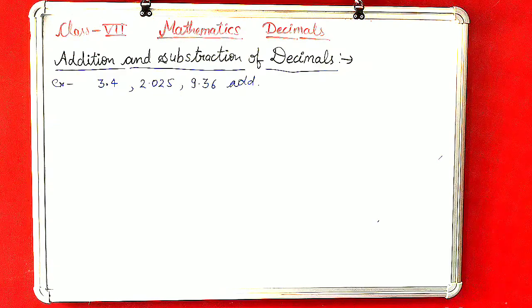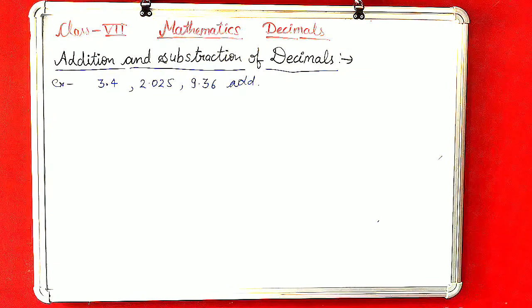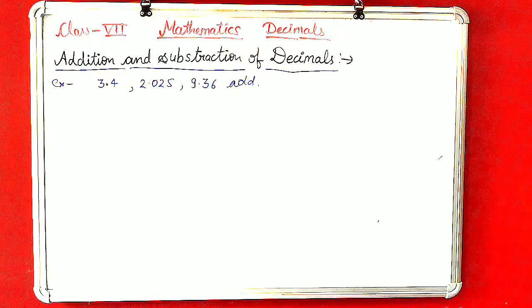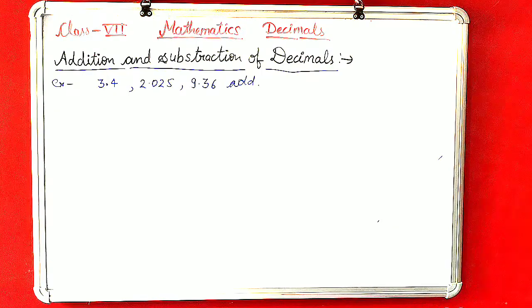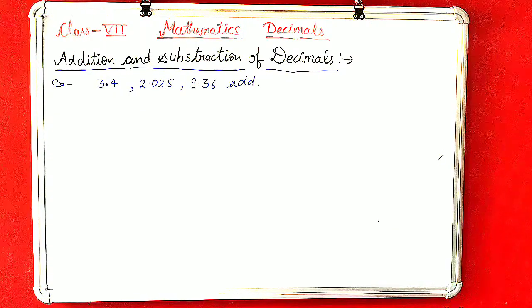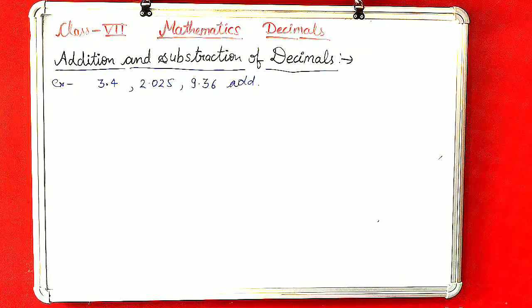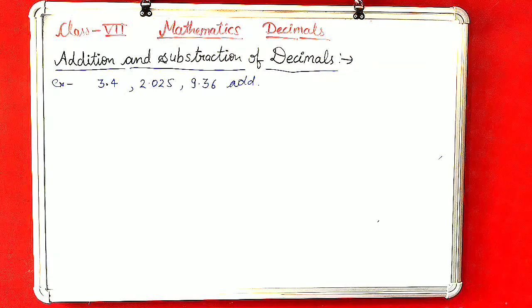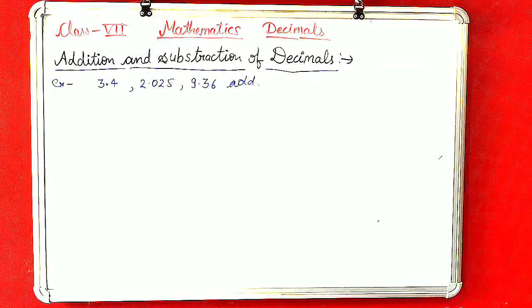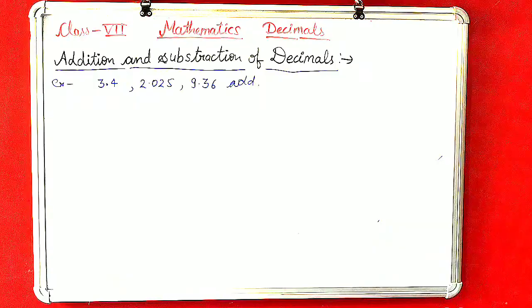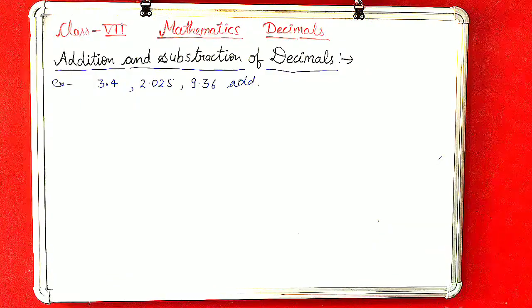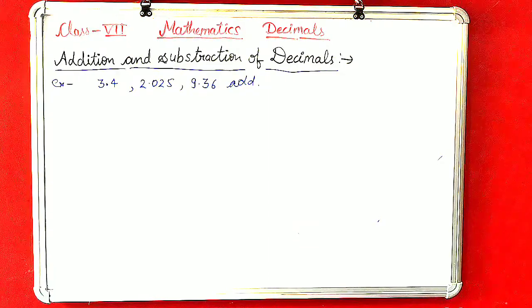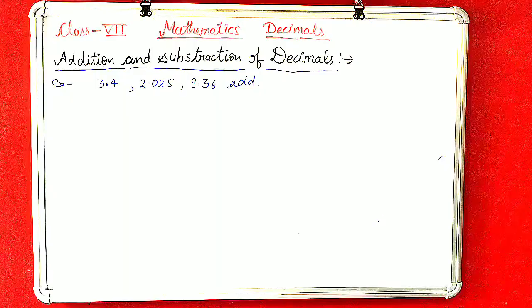In this video I will explain addition and subtraction of decimals. To add or subtract any decimal number, firstly we convert unlike decimal numbers into like decimal numbers. Already I have explained in previous video how to convert unlike decimal to like decimal.